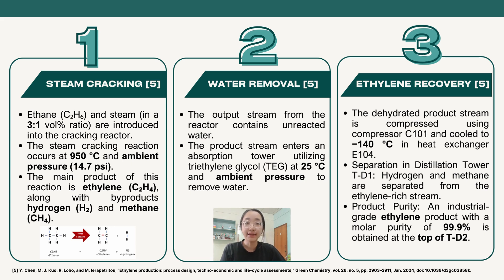Then comes the ethylene recovery, where the dehydrated product stream is compressed and cooled. First separation occurs in distillation tower T-D1, where hydrogen and methane are separated. Second separation occurs in T-D2, where an industrial-grade ethylene product with a molar purity of 99.9% is obtained.